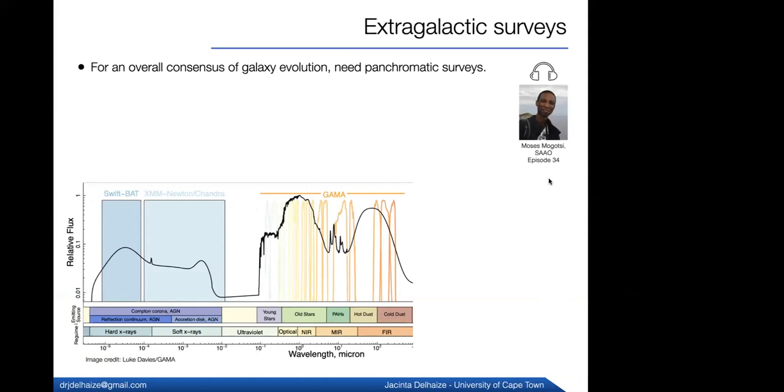So first of all, extragalactic surveys. To really understand a galaxy or galaxies as a whole, we really need multi-wavelength surveys because the different components of a galaxy emit at different wavelengths. This is a really nice plot made by Luke Davies, who is a member of the GAMA team. In the X-rays, you've got contributions from AGN. Then in the ultraviolet, optical and near-infrared, you've got contributions from young and old stars. We've got molecules. And in the far-infrared, we have the emission of dust.